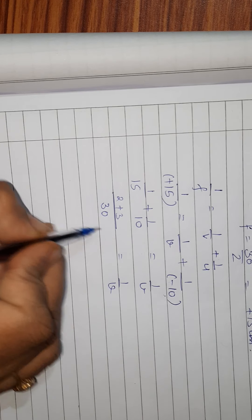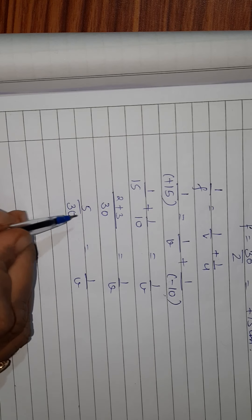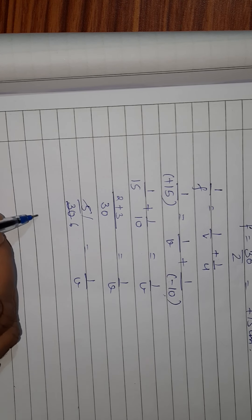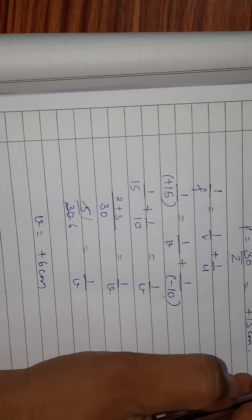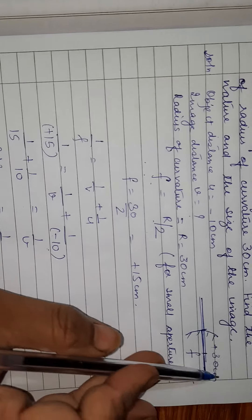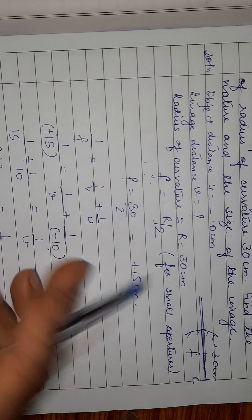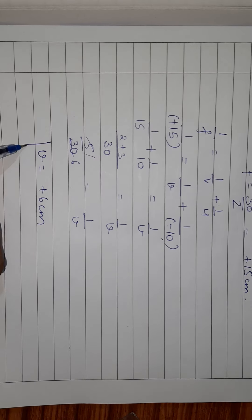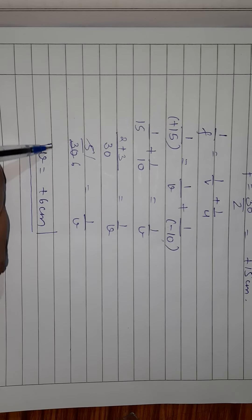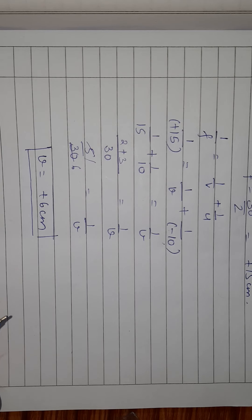LCM is 30. So 2 upon 30 plus 3 upon 30 equals 1 upon V, giving 5 upon 30 equals 1 upon V. Therefore V equals plus 6 centimeter. Since V is positive, the image is formed towards the right hand side of the mirror, confirming it is a virtual image. Sign convention is very important while solving such numericals.